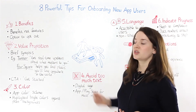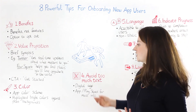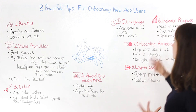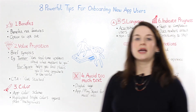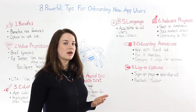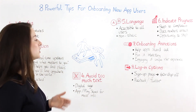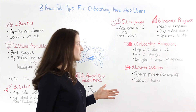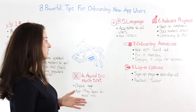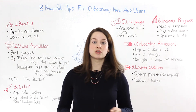So just to recap on those eight points: we looked at the benefits of the user using your app, the value proposition, the colour, avoiding too much text, using nice friendly language, indicating the progress of where they are in the onboarding process, onboarding animations as an option, and login options using social login such as Facebook and Twitter.